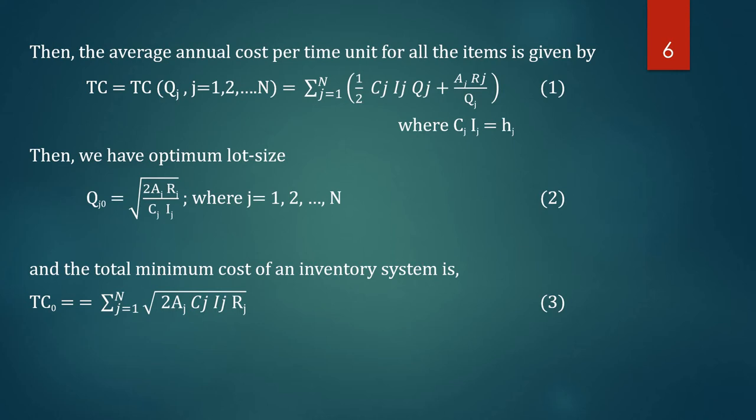The total cost is TC equal to the summation over j from 1 to N of (Cj·Ij·Qj/2 + Aj·Rj/Qj). The corresponding total minimum cost of the inventory system for all N items is TC0 equal to sigma from j=1 to N of the square root of (2·Aj·Cj·Ij·Rj).